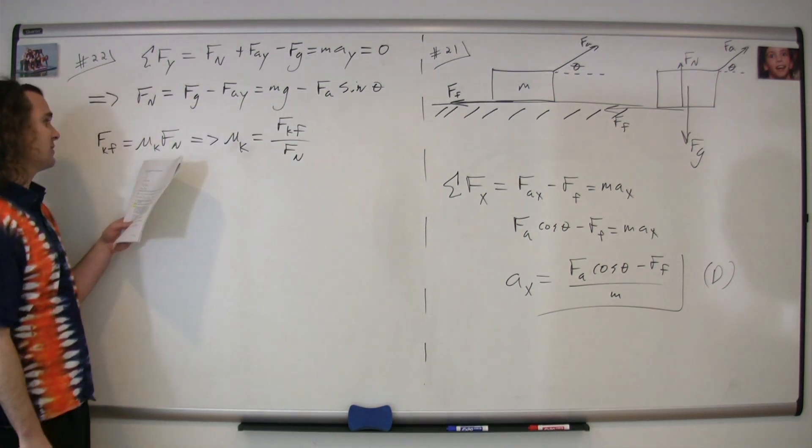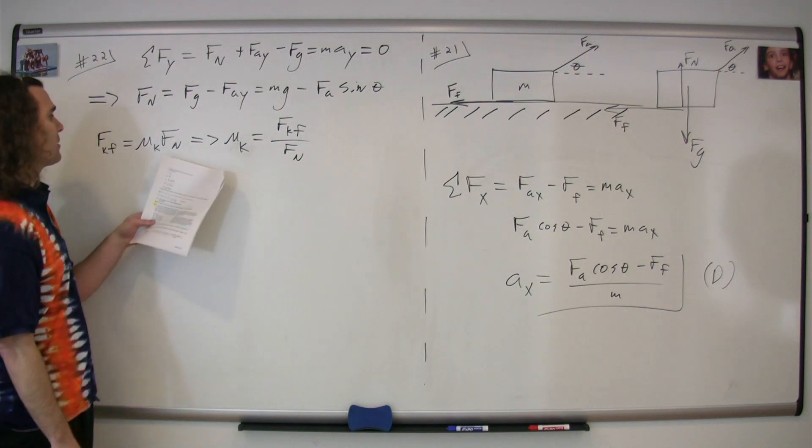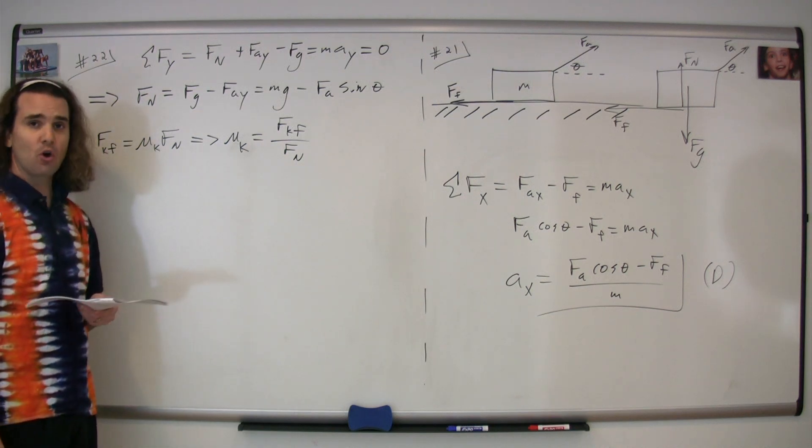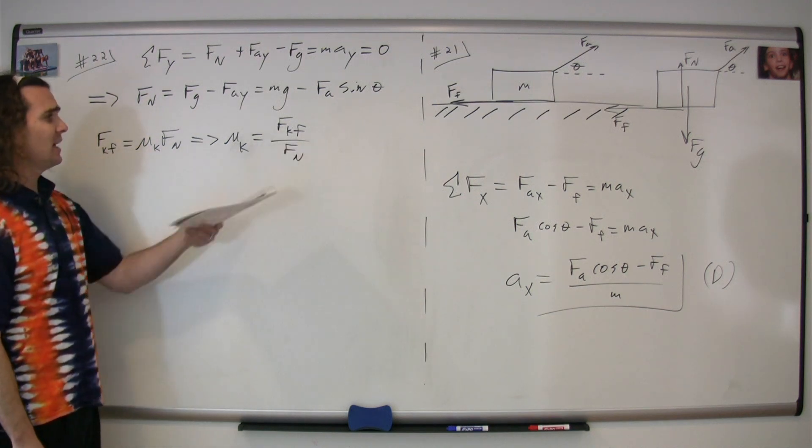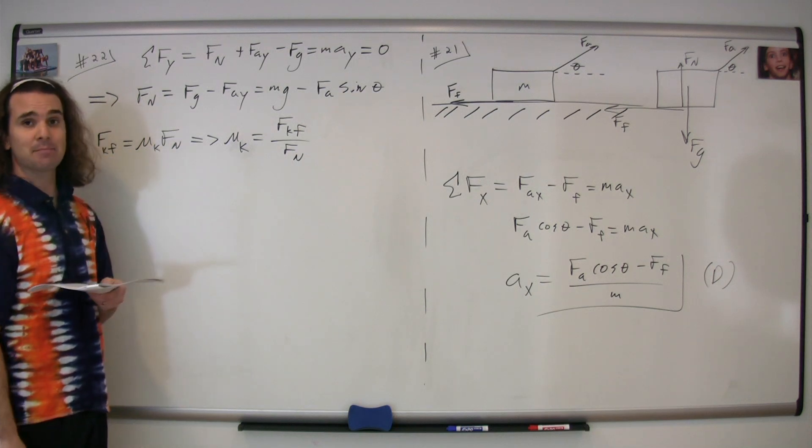The equation for the force of kinetic friction is that it's equal to the coefficient of kinetic friction times the force normal. We're looking for the coefficient of kinetic friction, so we solve for that. It's just going to be the force of kinetic friction divided by the force normal.